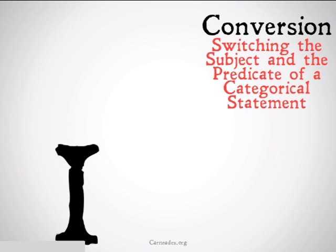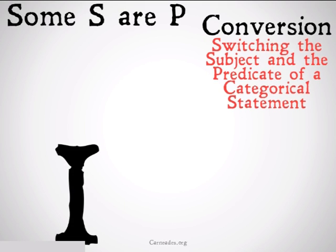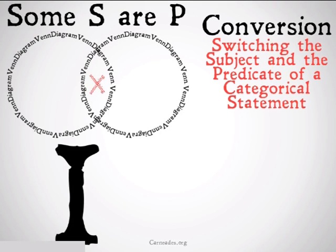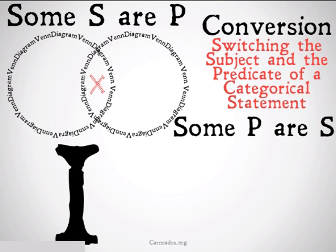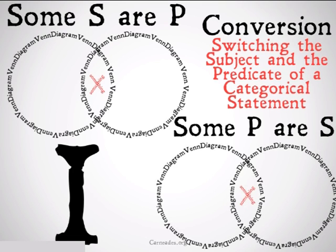Let's take a look at the other statement we can do conversion on, which is an I statement. Some S is P. We make our Venn diagram and put an X in the middle, showing that there's at least one S that is also a P. If we switch the S and the P, we get Some P is S. Our Venn diagram is going to be identical — the X is going to be in the middle once again, because there's at least one P that is an S. So conversion is allowed for E and I statements.